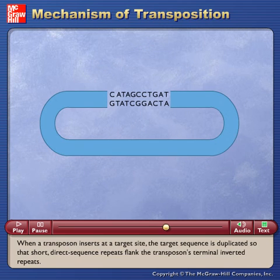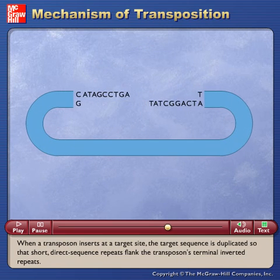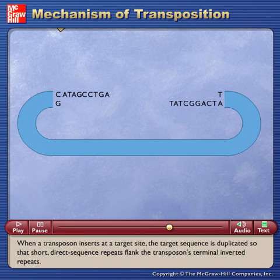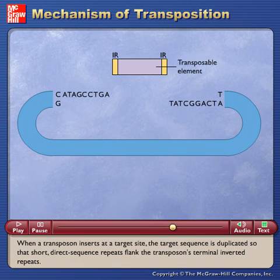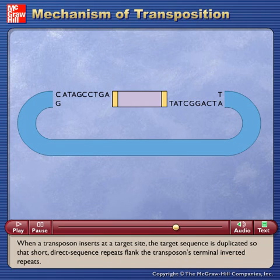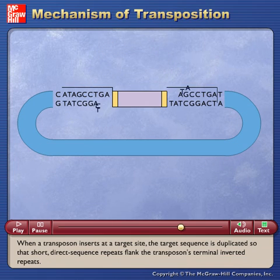When a transposon inserts at a target site, the target sequence is duplicated so that short direct sequence repeats flank the transposon's terminal inverted repeats.